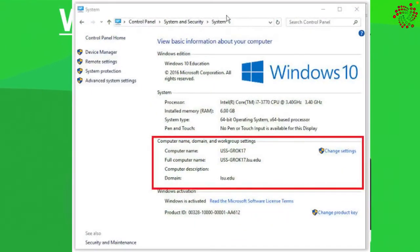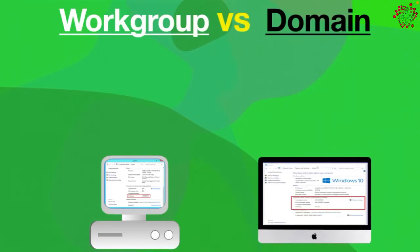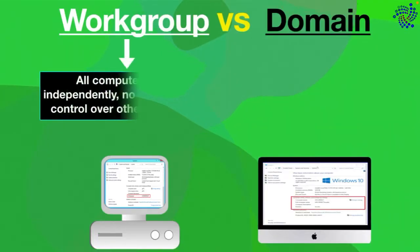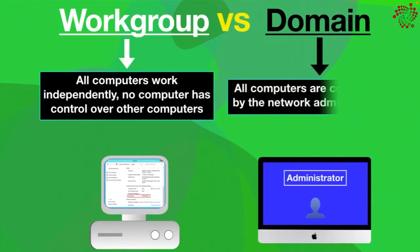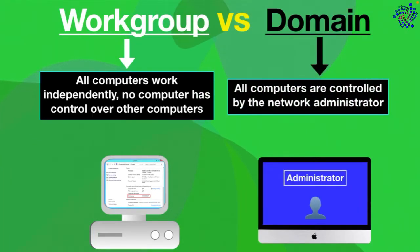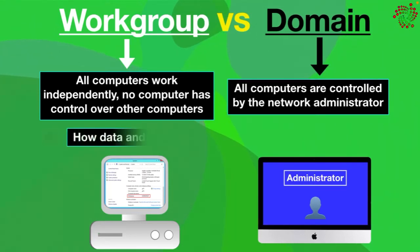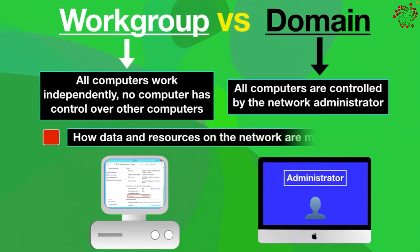The main difference between workgroup and domain is that in a workgroup all computers work independently — no computer has control over other computers — while in a domain all computers are controlled by the network administrator. Another major difference is how data and resources on the network are managed.